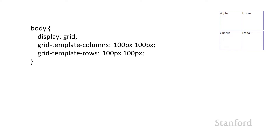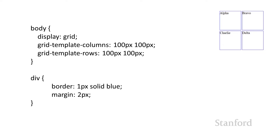So body display type is grid. Then I'm going to define the number of columns and the number of rows using grid-template-columns and grid-template-rows. I have two columns, 100 pixels each, and two rows, 100 pixels each. The way I'm getting it to display a border so it's obvious what's going on is I've got the border setting: one pixel solid blue with a two pixel margin.